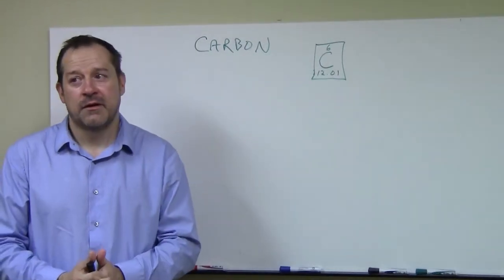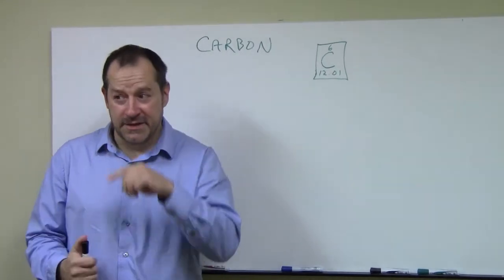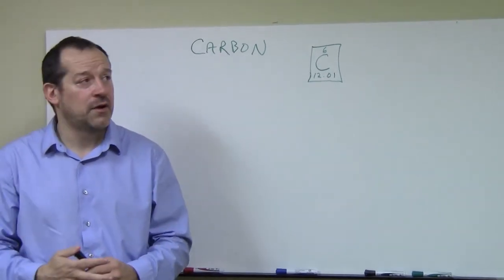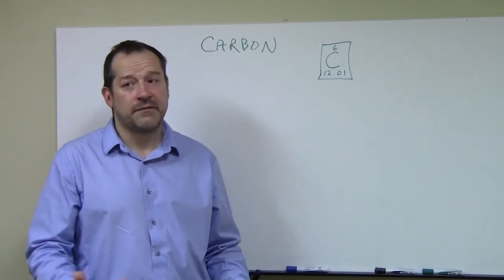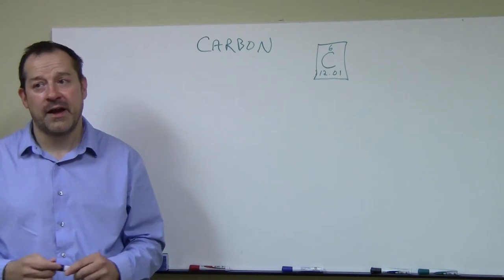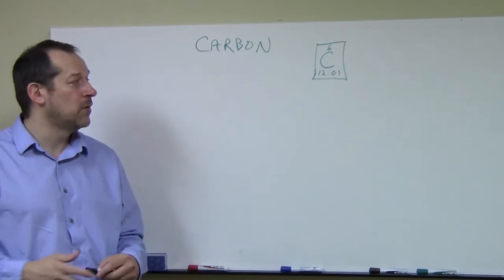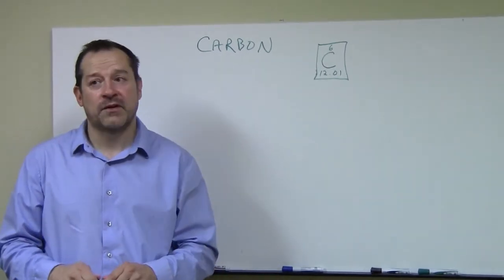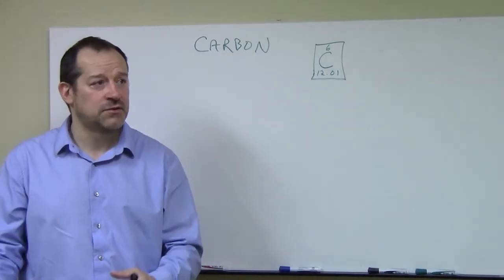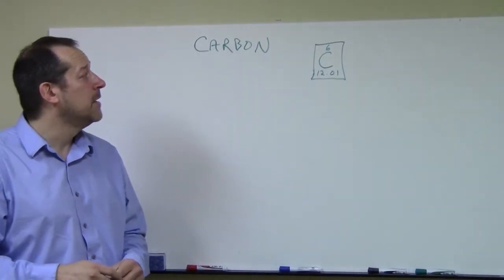We are going to talk about hybrid orbitals. If you're to the point where you want to understand hybrid orbitals, it's presumed that you know a little bit about electron configurations and what electrons are doing in certain configurations for atoms. This is really the perfect way to transition from what electrons are doing in simplified fashion to what they're actually doing when they form hybrid orbitals and bonds with other atoms.